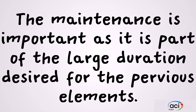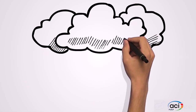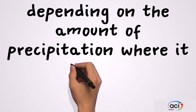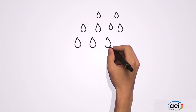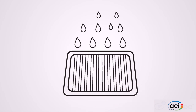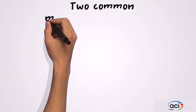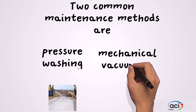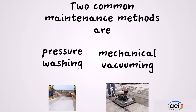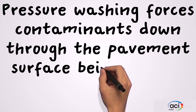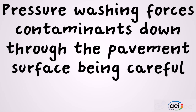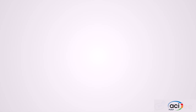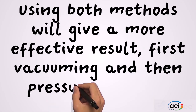Maintenance is important as it contributes to the desired long duration. It should be done at short time intervals, either annual or semi-annual, depending on the amount of precipitation where it is used. The surrounding sewer system will also prevent the flow of materials over the pavement surfaces, avoiding clogging and preserving its beneficial characteristics. Two common maintenance methods are pressure washing and mechanical vacuuming. Pressure washing forces contaminants down through the pavement surface, while mechanical aspiration removes contaminants by extracting them from the pores. Using both methods will give a more effective result.